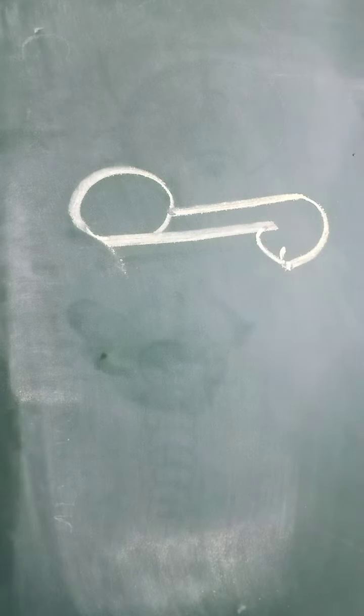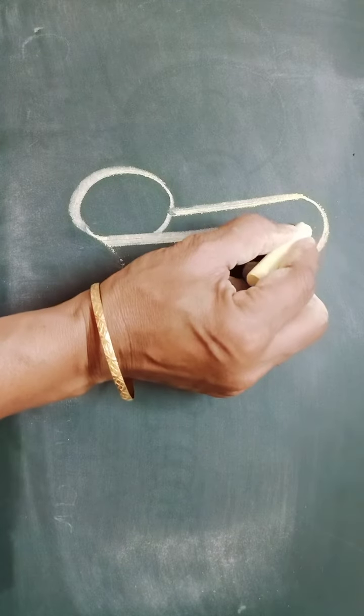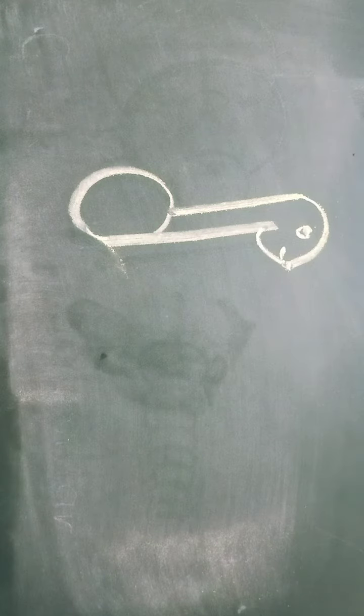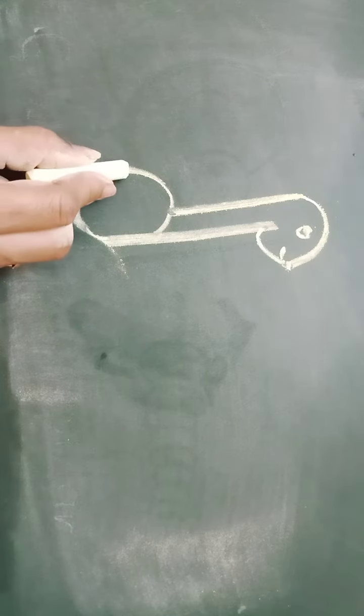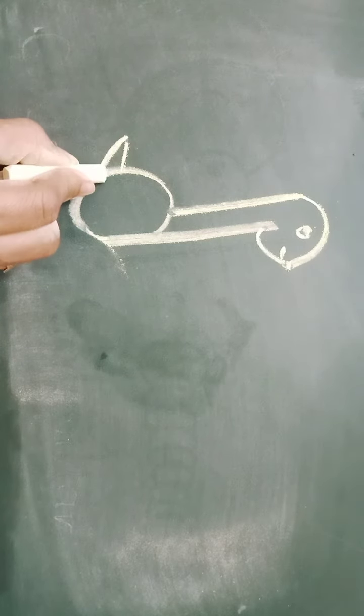And for the eyes of the dinosaur. Now, for the tail, you can draw one curved and one slanting line like this. That is the tail.